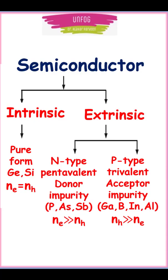Extrinsic semiconductors are further classified into n-type and p-type semiconductors. N-type semiconductors are made of pentavalent impurity and this is a donor impurity, whereas p-type semiconductors are made of trivalent impurity which is an acceptor impurity.